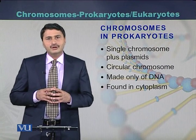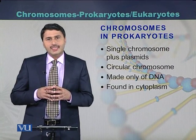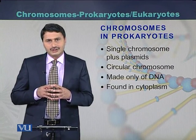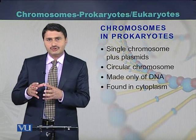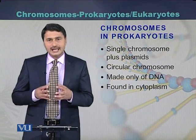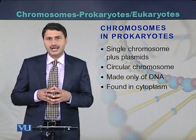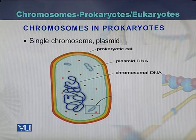Chromosomes in prokaryotes: the chromosome is made up of DNA, and there is also a plasmid in the prokaryotic cell — a main chromosome as well as an extra-chromosomal DNA which is called a plasmid. It is made up of DNA and is present in the cytoplasm. The chromosome present in the prokaryotic cell is a single circular chromosome, and the plasmid is an extra-chromosomal DNA also present in the prokaryotic cell.